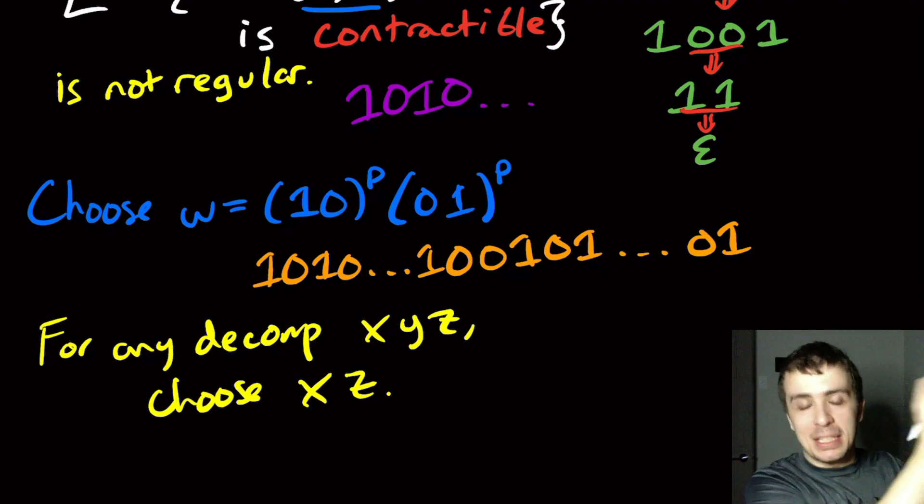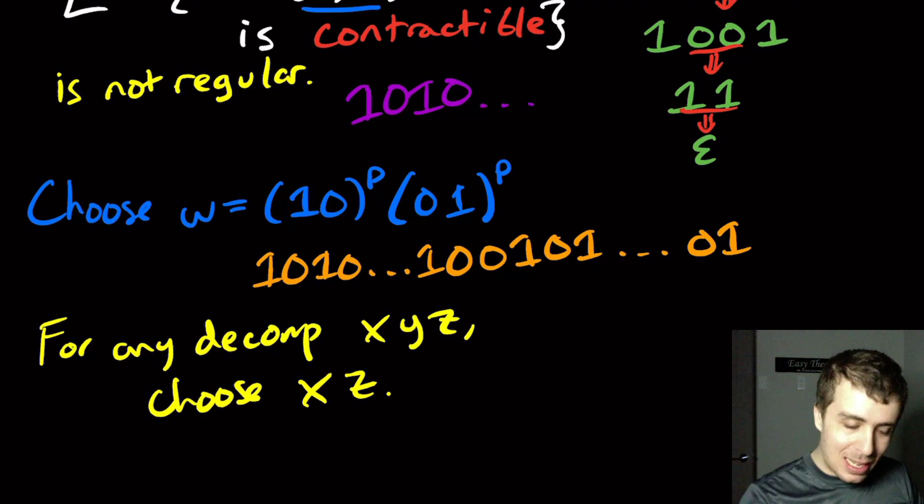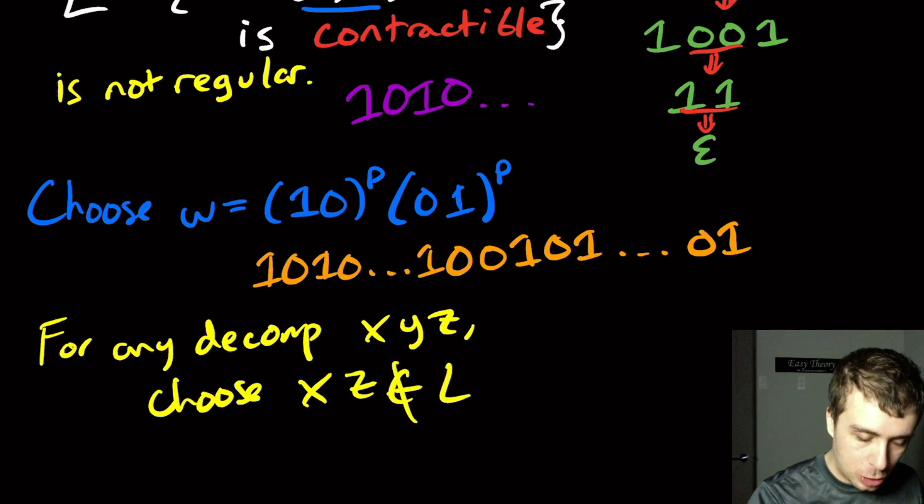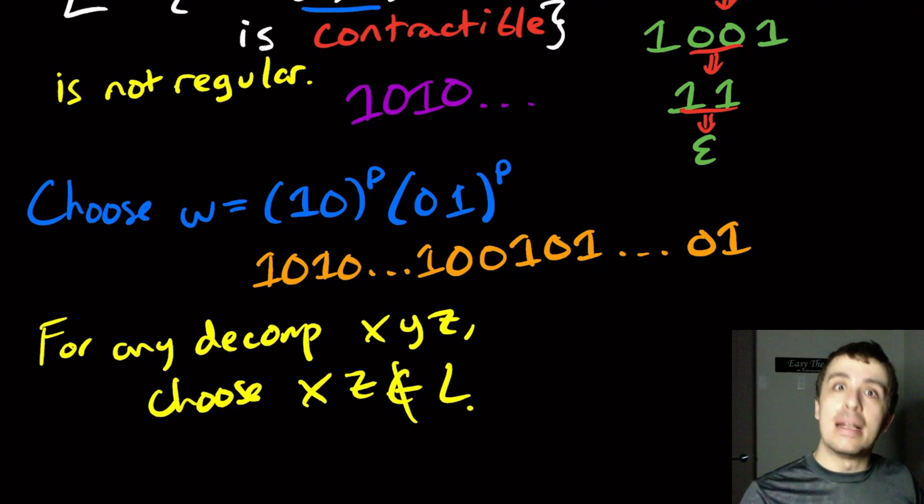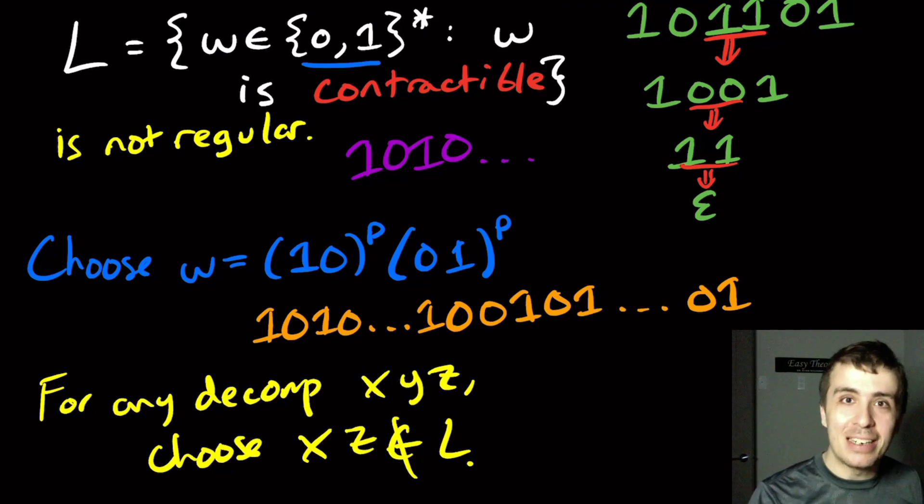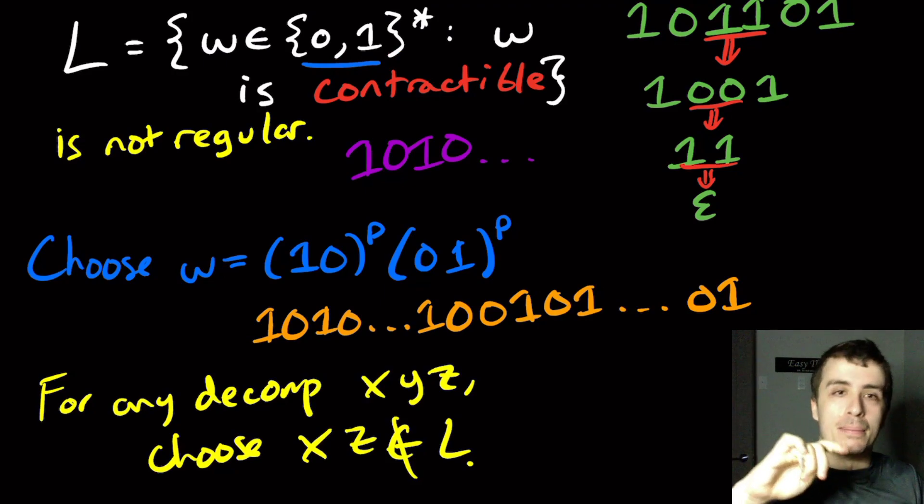That means that the thing on the right side can't be contractible, and so this string is not in the language anymore. That will give us the contradiction that we need to show that this language is not regular. I just wasn't thinking very hard when I said that you needed at least three characters in the original video, but the same idea works with two characters.